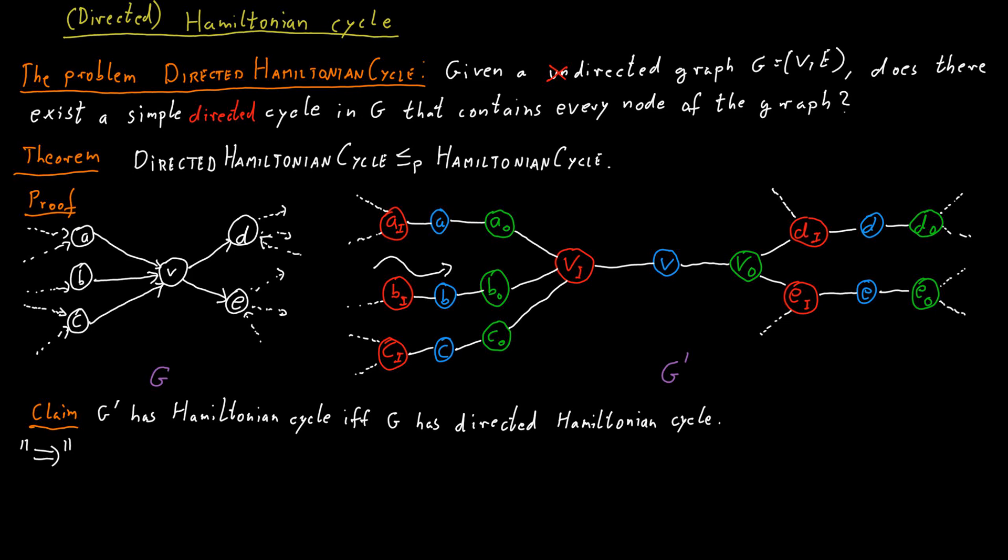For this, realize that if we have some vertex V here, the only way we can visit V in our Hamiltonian cycle is that we first have VI and then V and then VO in the cycle with no other vertex in between, or the other way around. We could go from VO to V to VI.